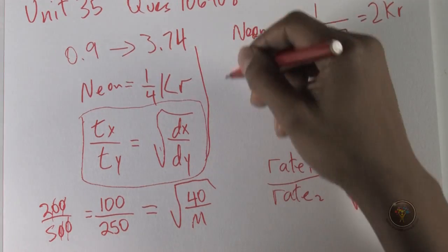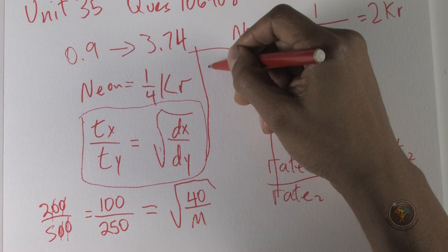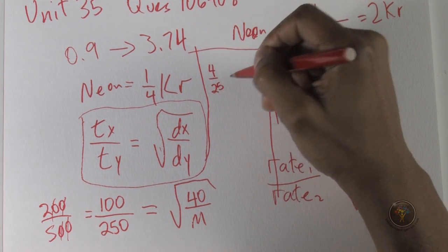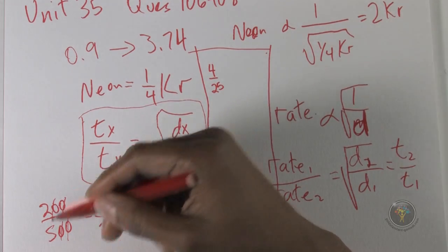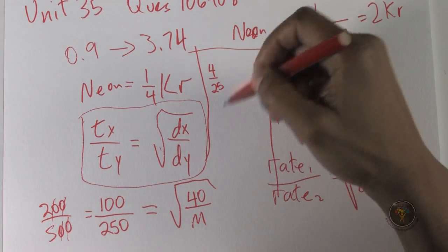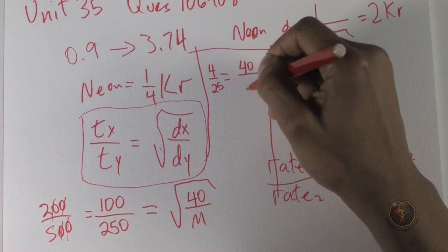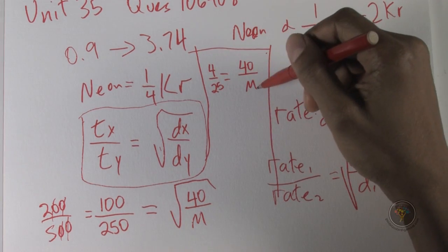And if we square both sides, we're going to end up with 4 over 25 if this is squared, 4 over 25, and that's equal to 40 over M.